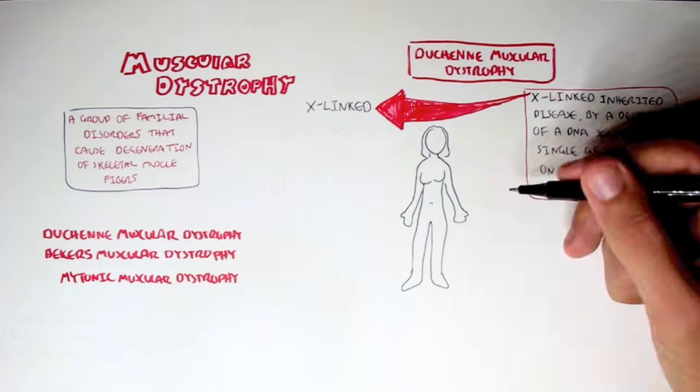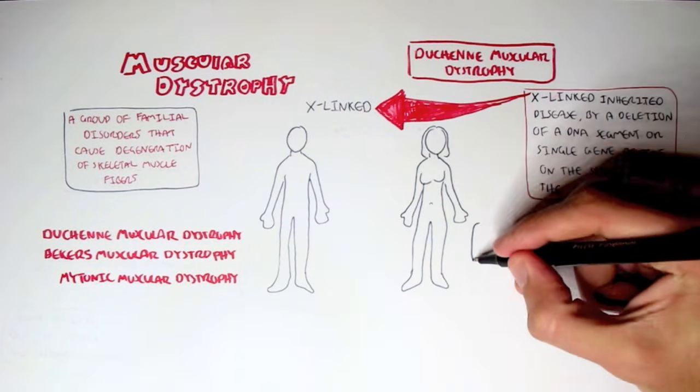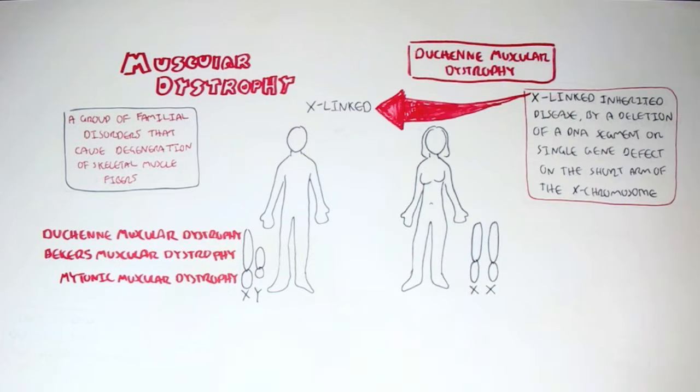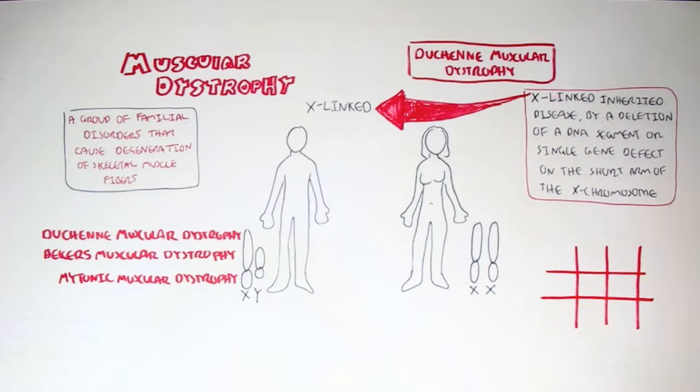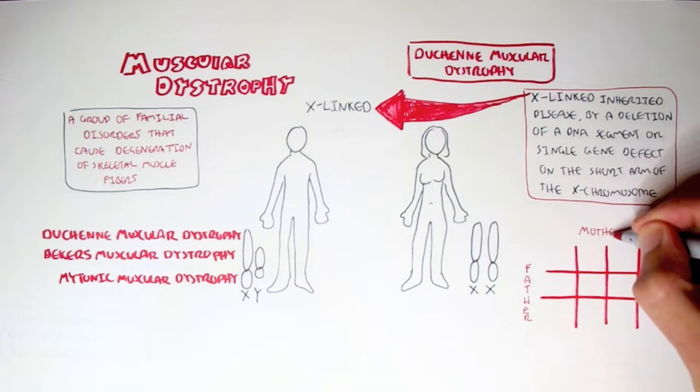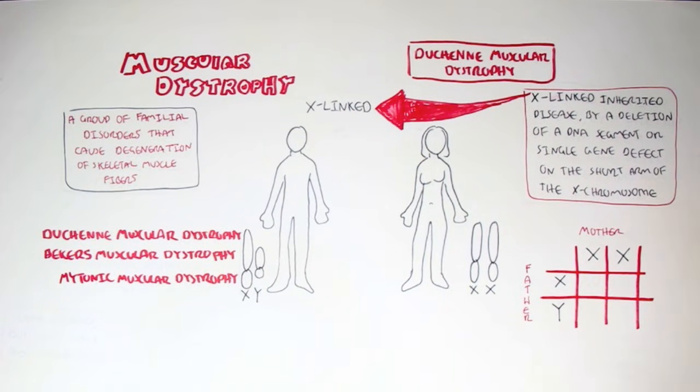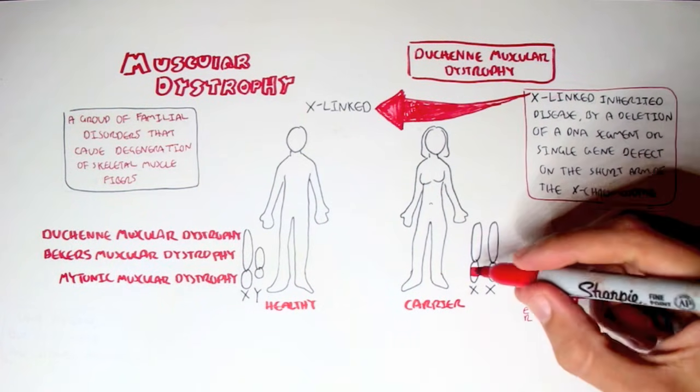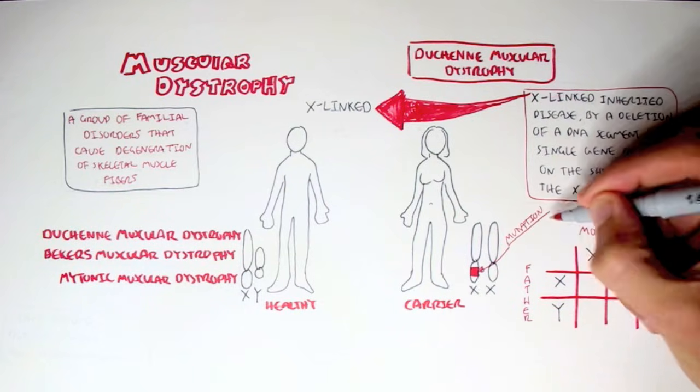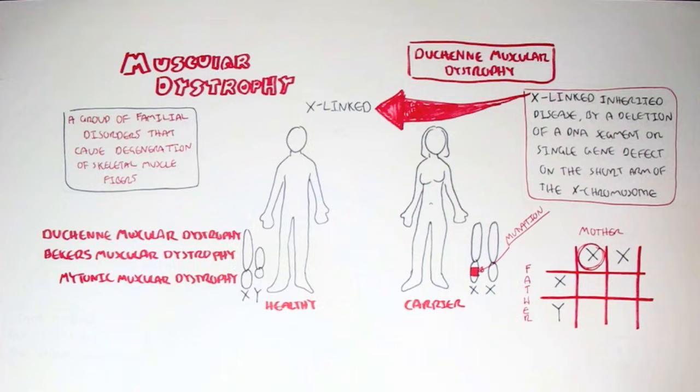In females, the sex chromosomes are the same, two X's, and so they're referred to as homogametes. Males have two distinct sex chromosomes, and so they're called heterogametes. If we line up the father and the mother, we have mother with XX, homogametes, and the father with XY. X-linked inherited disease means that the mutation or the deletion of the DNA segment is on the X chromosome, usually in the woman because women have two X chromosomes. But this does not mean the female has the muscular dystrophy. She can be the carrier. And the male is healthy, in this case. So now, if we do some cross-sections...